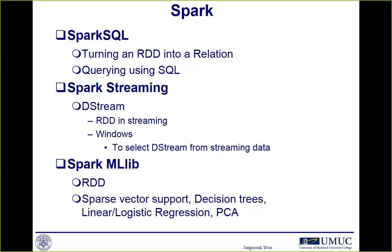Spark Streaming is for storing and computing streaming data from servers or sensors. Whenever a server or sensor generates data, you can immediately take those data as streaming data to compute or store using the Spark Streaming API. Also, predictive analysis is a hot area, so Spark supports a machine learning library.